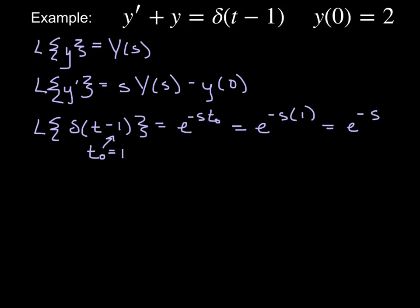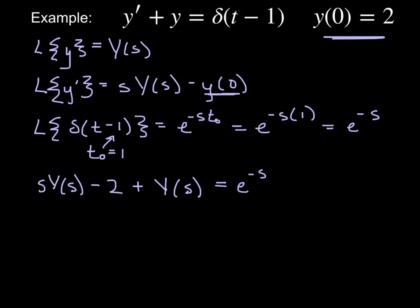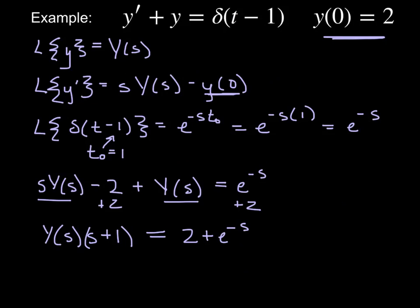Plugging everything in: S·Y(S) − 2 + Y(S) = e^(−S). Adding 2 to both sides and gathering the Y(S) terms gives Y(S)·(S + 1) = 2 + e^(−S). Dividing by (S + 1) to solve for Y(S) yields Y(S) = 2/(S + 1) + e^(−S)/(S + 1).